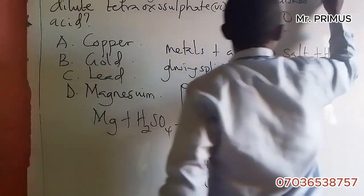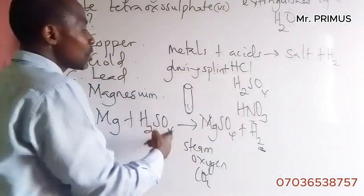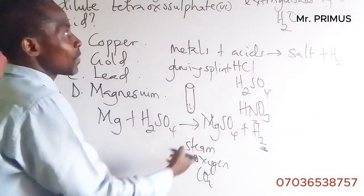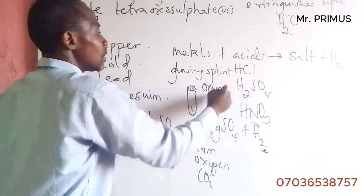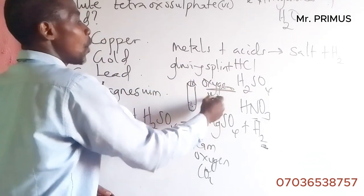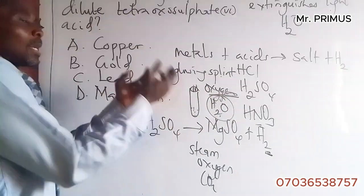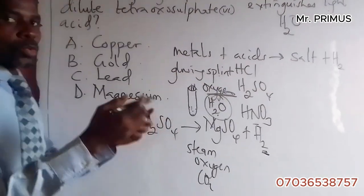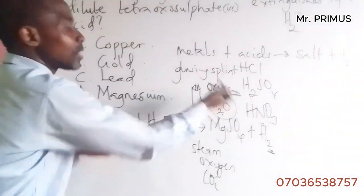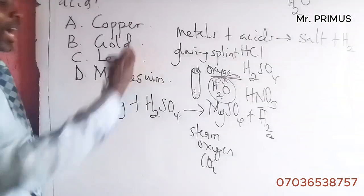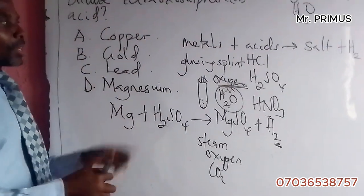The glowing splint is extinguished because the hydrogen gas combines explosively with oxygen to form steam. It pops and extinguishes the light. That is what happens — it pops and extinguishes the splint because hydrogen and oxygen form steam.